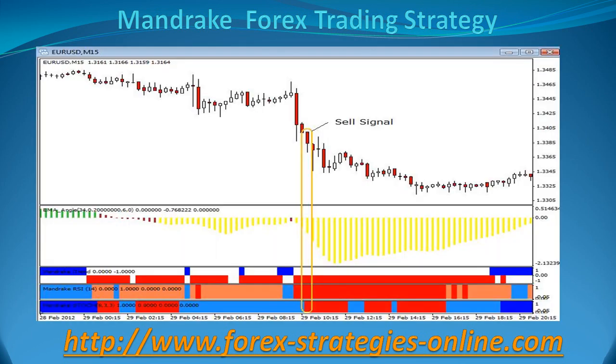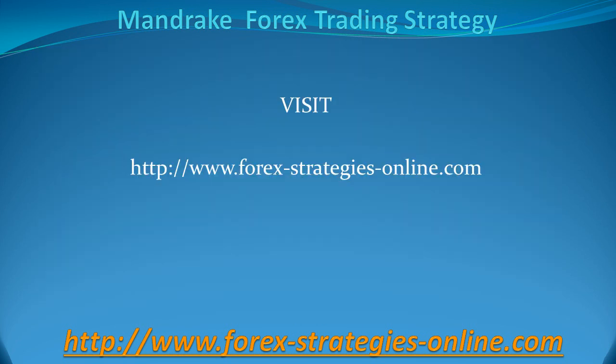In the picture above you can see that the EMA Angle Indicator turns yellow and the Mandrake Indicators turn red — all 3 of them have to be red. This is your sell signal.